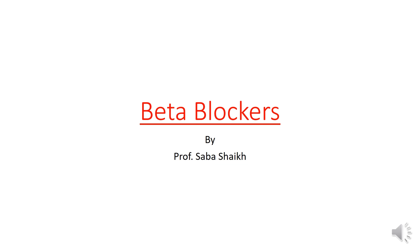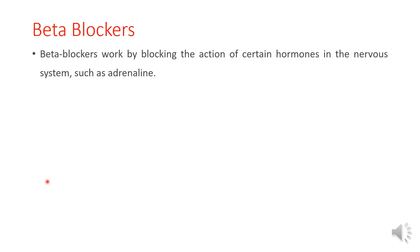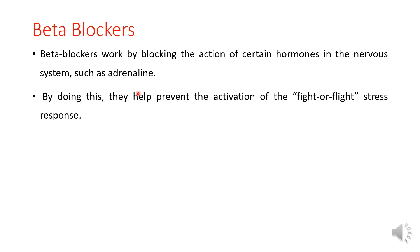Hello everyone, today we are going to discuss beta blockers by Professor Sabhasek. First we will see what beta blockers mean. Beta blockers work by blocking the action of certain hormones in the nervous system, such as adrenaline. In short, beta blockers are drugs which block the action of adrenaline.